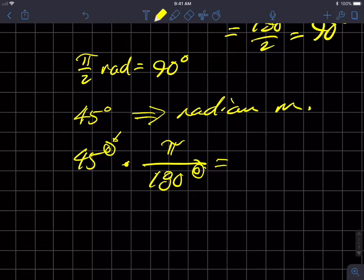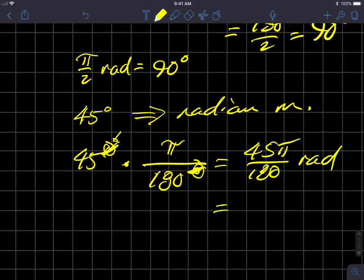And so, we're going to get 45 times π over 180. The degrees cancel. So this is in radians. And so we get 45 divided by 180. Well, how many times does 45 go into 45? Once. How many times does 45 go into 180? Four times. So we get π over 4 radians. And in fact, π over 4 radians is equivalent to 45 degrees.